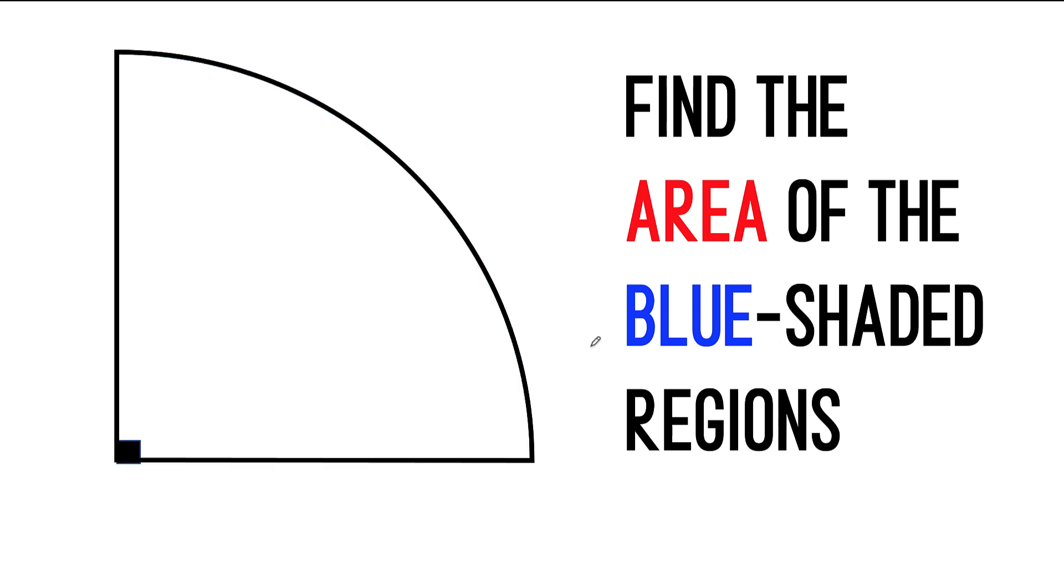Let's begin by looking at its basic components. We have a quarter circle here with a radius of 4 units. Then, we construct these two semicircles with a diameter equal to the radius of the quarter circle. So the radius of these two semicircles are both equal to 2 units.